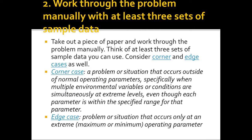Also consider corner and edge cases. A corner case is a problem or situation that occurs outside of normal operating parameters — specifically when multiple environmental variables or conditions are simultaneously at extreme levels, even though each parameter is within the specified range. For example, if you're trying to get the average grade of a student, what if one grade is missing or exceeds the range? An edge case is a problem that occurs only at extreme, maximum, or minimum operating parameters. We should create sample data and try to work through the problem manually for these scenarios.